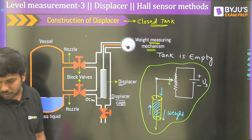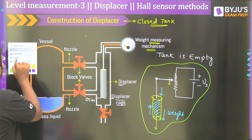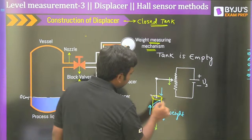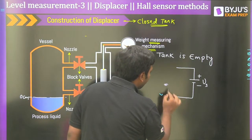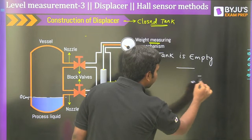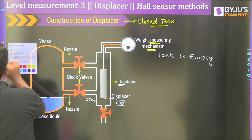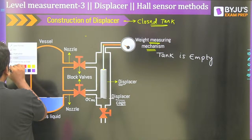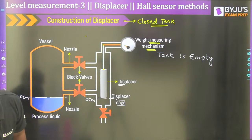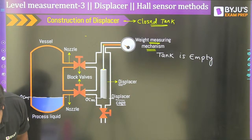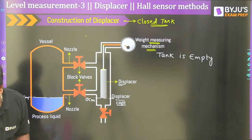Now, if KH, I, and T are all constant, and the magnetic field B changes, then the Hall voltage VH will change proportionally. This is the key principle behind the Hall sensor for level measurement — the changing magnetic field will produce a changing voltage output.